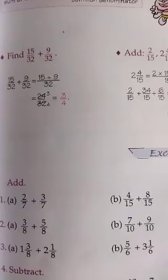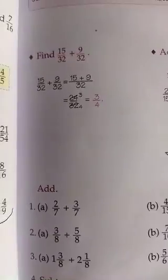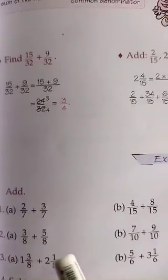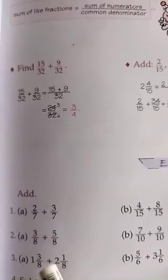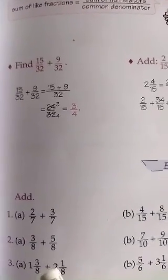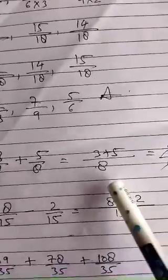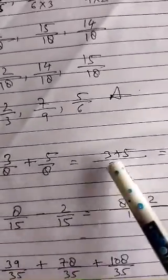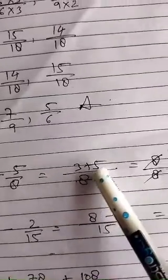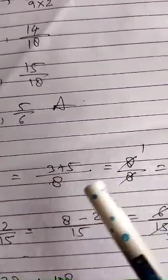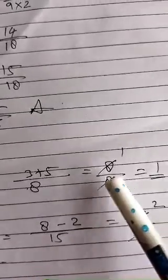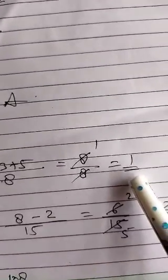Let me explain question 2, part a: 3 upon 8 plus 5 upon 8. The denominator is the same, so there is no need to take the LCM. Just write the denominator once and add the numerators: 3 plus 5 upon 8. That gives 8 upon 8, which can be reduced — 8 ones are 8 — so your answer is 1.